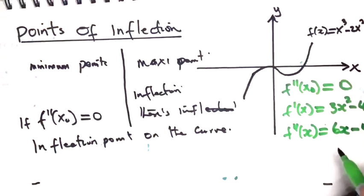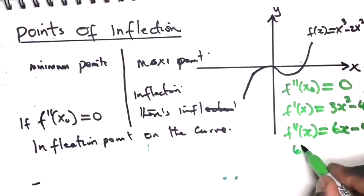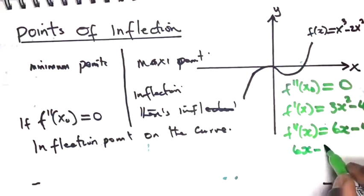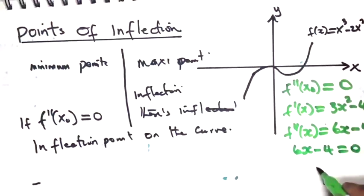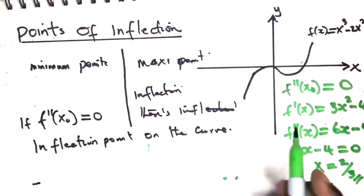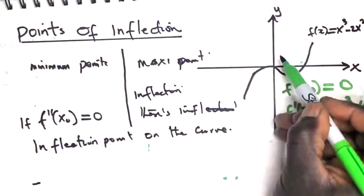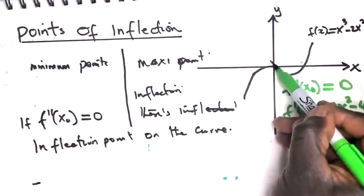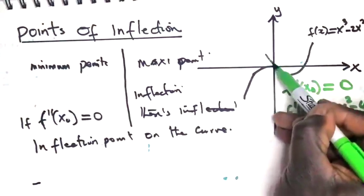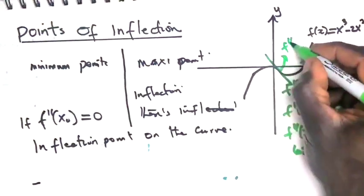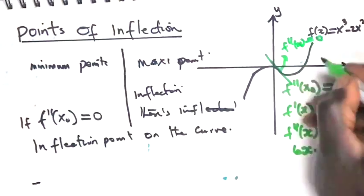Now equate this one to zero. So 6x minus 4 is equal to zero. In this case, x is 2 over 3. This is the inflection point, right about here. This is where f double prime is equal to zero.